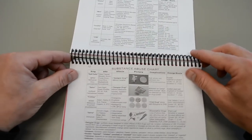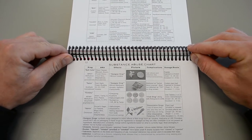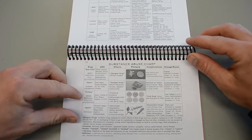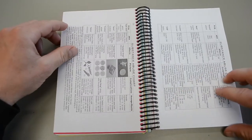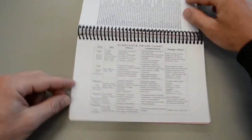This is your substance abuse chart. Gives you information on commonly abused substances. Things that people are either found doing or overdose on. Descriptions on all of them continues on the other side here.